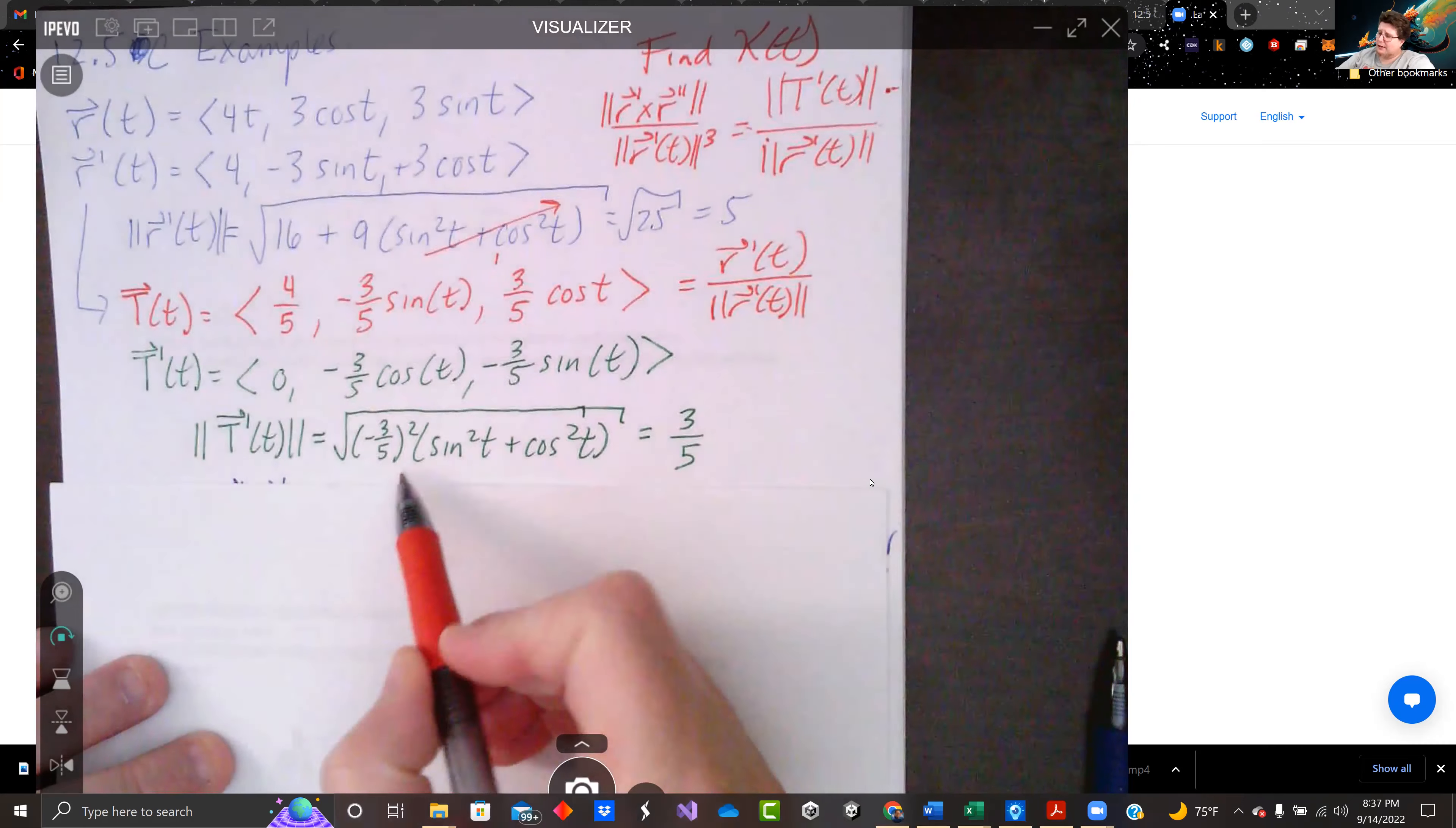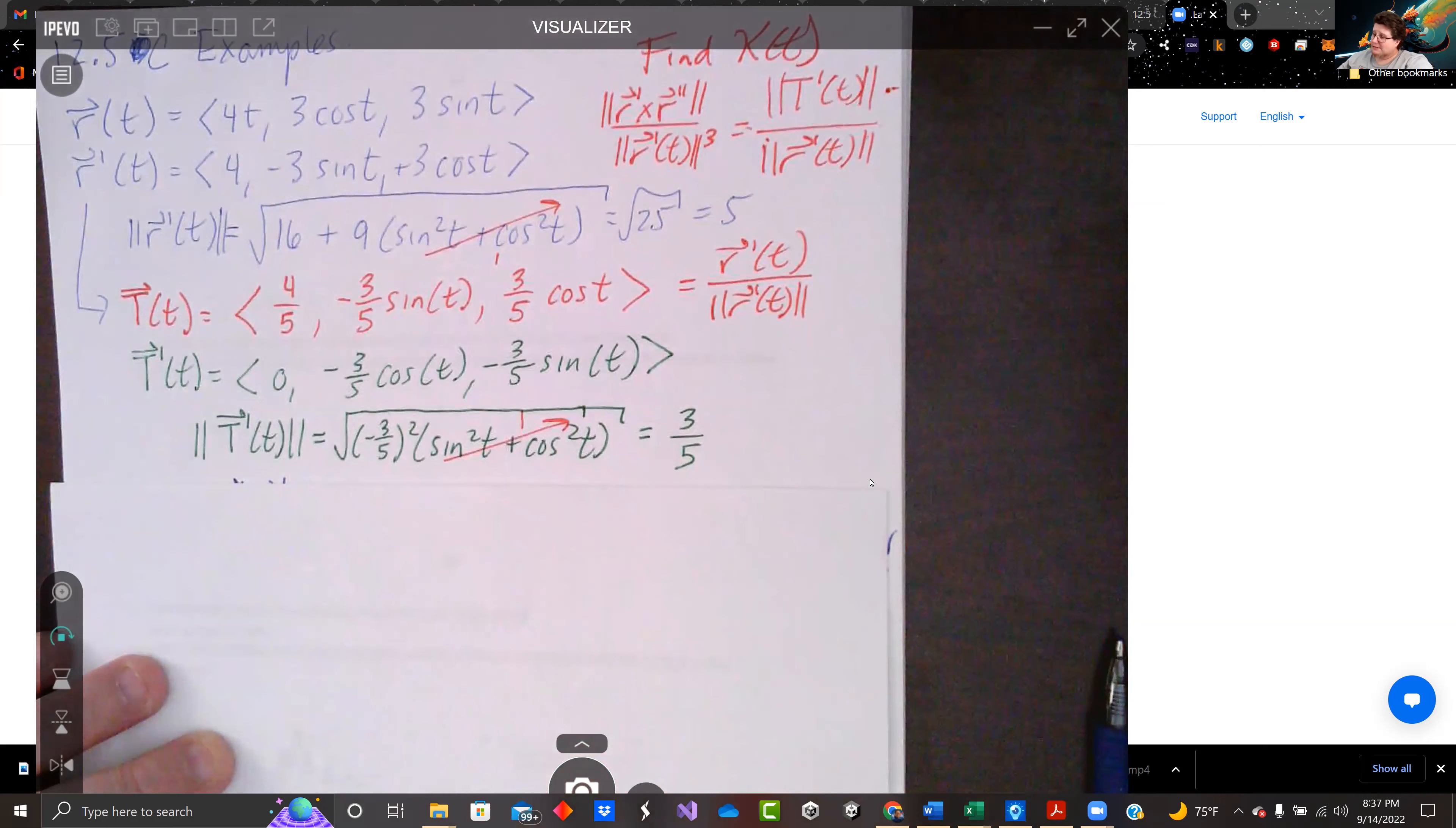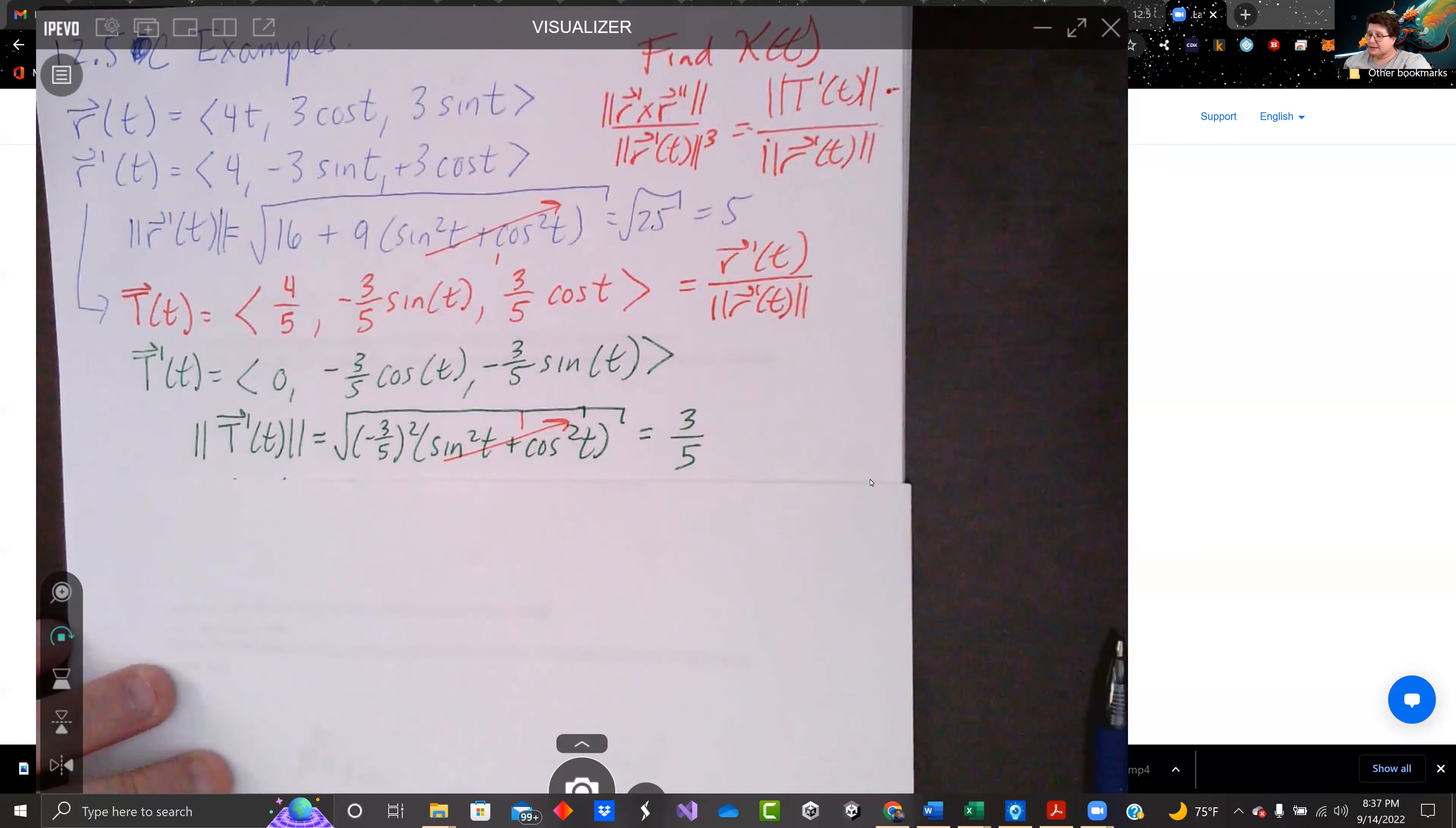We take the magnitude of that. We have negative 3 fifths squared. And with our sine squared plus cosine squared, again, going to 1. This is why we like trig functions in this stuff. We get the magnitude of t prime of t is just 3 fifths.